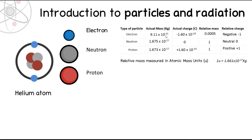These values are all very small, which can make them quite difficult to work with in calculations. So what scientists do is convert them to relative masses and relative charges, which are much nicer whole numbers. The relative masses are: for the electron, about 0.0005; for the neutron, 1; and for the proton, 1. These are relative, not exact values, but that's all you need to know for AS.